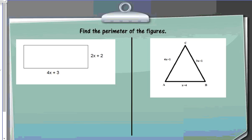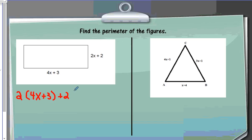Now, if I wanted to throw some algebra in there, I'm going to find the perimeter of this rectangle. Still the same idea — I'm going to do 2 times my length, but instead of my length being a nice number, it's actually going to be an expression. So I have 4x plus 3, meaning 2 times (4x plus 3). And I'm going to add that to my width: 2 times (2x plus 2). Then I'm going to use the distributive property to simplify my answer.